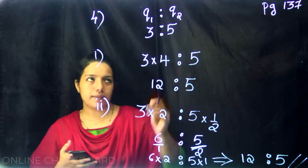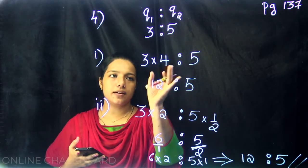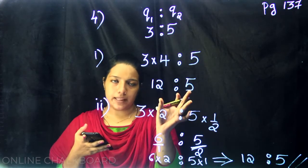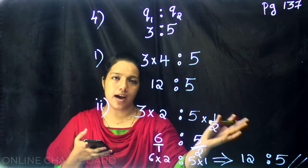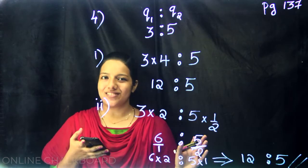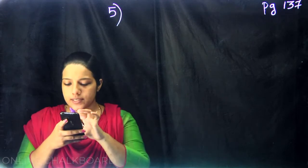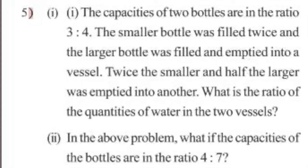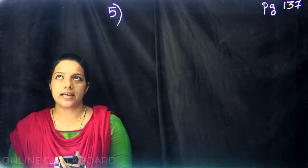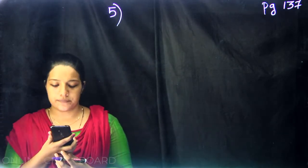We have the ratio 3 is to 5. Now for the fifth problem, there are 2 parts. The first part: the capacity of 2 bottles are in a ratio. The smaller bottle was filled twice and the larger bottle was filled once and emptied into a vessel. Twice the smaller and half the larger was emptied into another vessel. What is the ratio of the quantities of water in the 2 vessels?